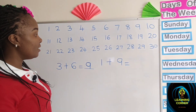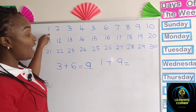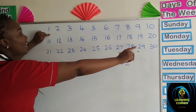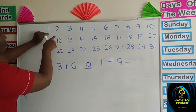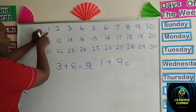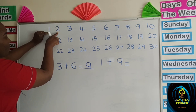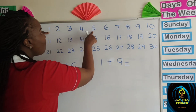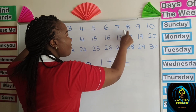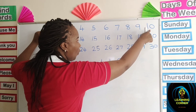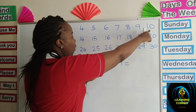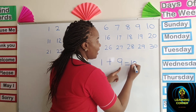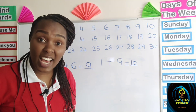Let us try one plus nine. This is one here. How many times forward will I count? Nine times. I have to count nine times forward to find my answer. You don't start where the starting sum is — you start from the next number. One, two, three, four, five, six, seven, eight, nine. So the total sum of one and nine equals ten. I write ten.